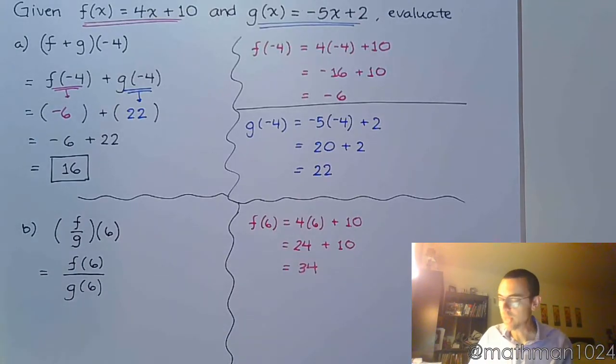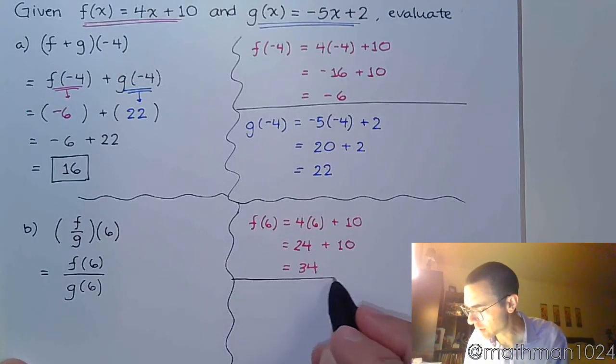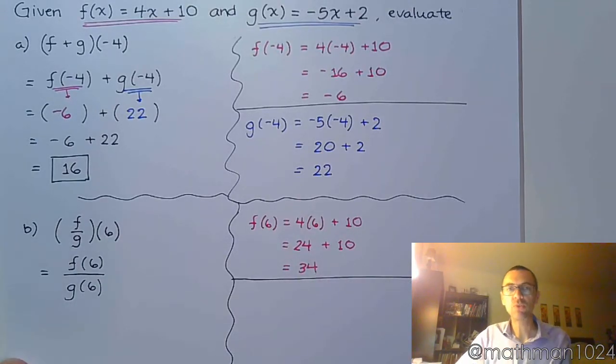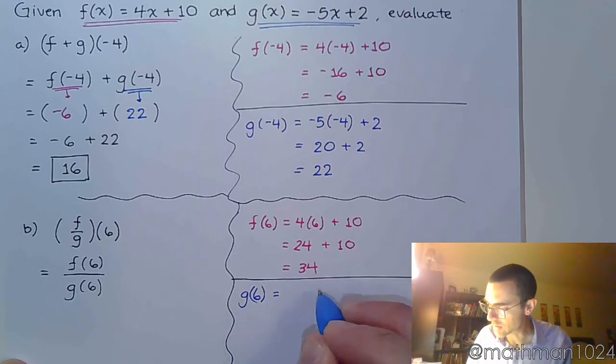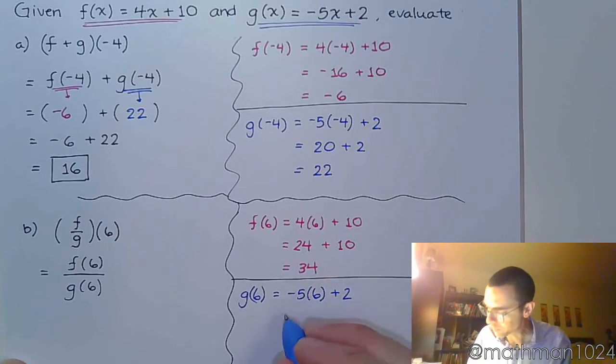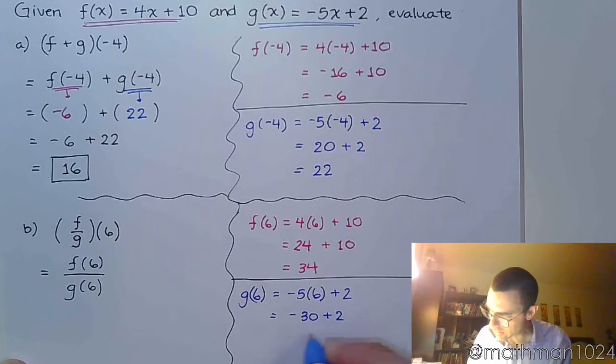That's half of the work. The other half is finding and evaluating g(6). So g(6) is -5 times 6 plus 2. So, -30 + 2 = -28.